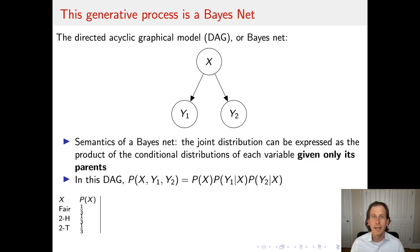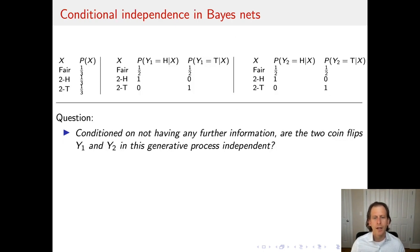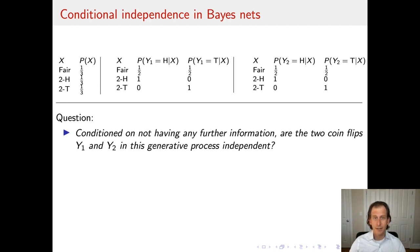Here's an example distribution: the coin type is uniform over fair, two-headed, or two-tailed. Two-headed coins always come up heads, two-tailed coins always come up tails, and fair coins are 50-50. This is true of both the first and second coin flip. We can then look at the question: conditioning on no further information, are the two coin flips Y1 and Y2 in this generative process independent? I encourage you to pause and think carefully about this before we go on.